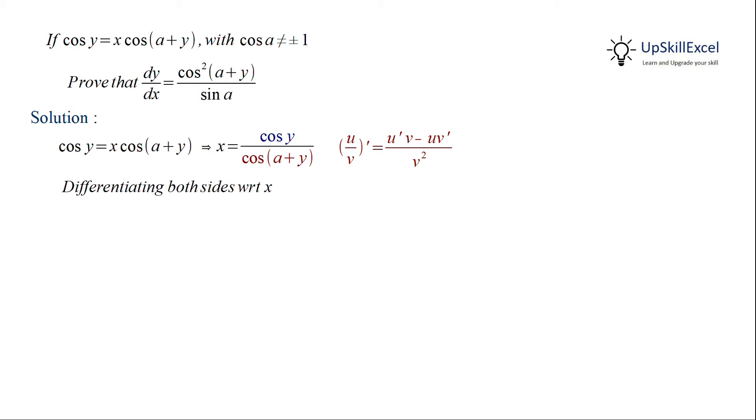So differentiating this and applying the u by v formula, on the left-hand side d/dx of x will become 1. And on the right-hand side we have cos terms under differentiation.